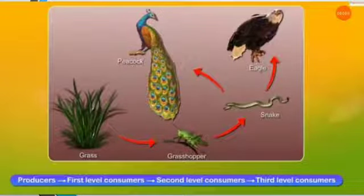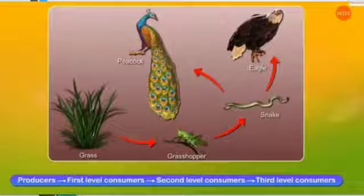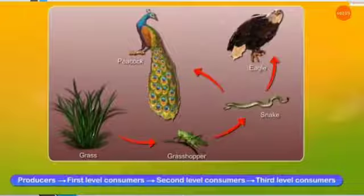The producer gives energy to the first level consumer, the first level consumer gives energy to the second level consumer, and the second level consumer gives energy to the next level consumer. Grass gives energy to grasshopper, grasshopper gives energy to snake, snake gives energy to peacock or eagle. This is the energy transfer from one living thing to another — this is a food chain.